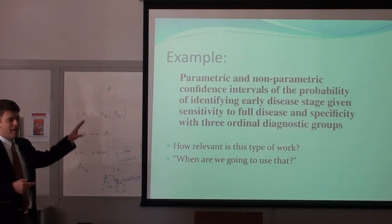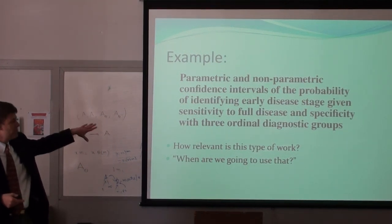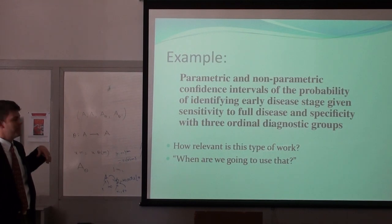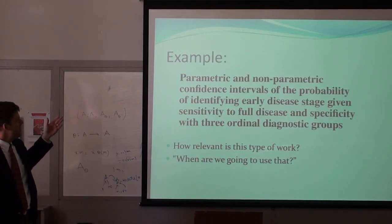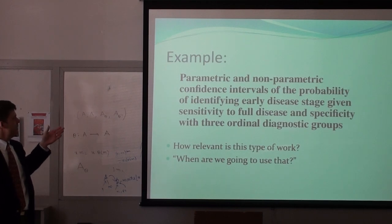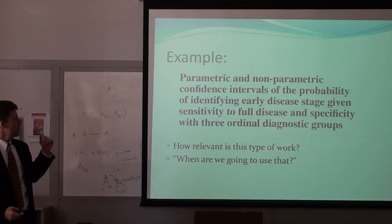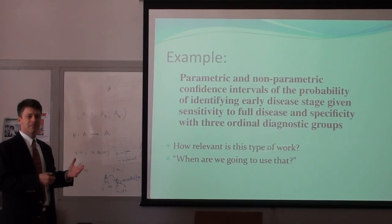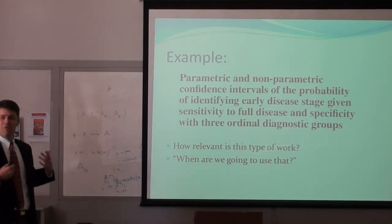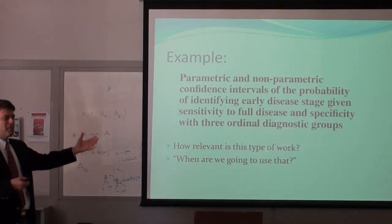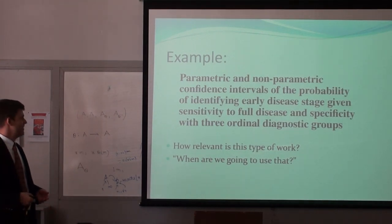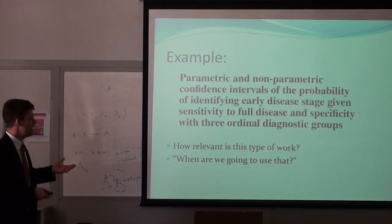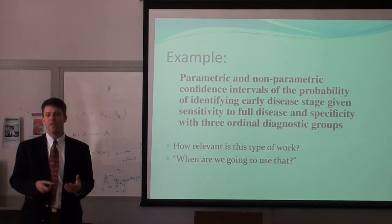Please tell me you have not been involved in this paper — I'm not trying to pick on it. Here's just an example of a new biostatistic method that was published: 'Parametric and nonparametric confidence intervals of the probability of identifying early disease stage, given sensitivity to full disease and specificity within three ordinal diagnostic groups.' I'm sure that's a very useful method, but I just wondered — if somebody publishes a paper like this, is anybody ever going to use it?